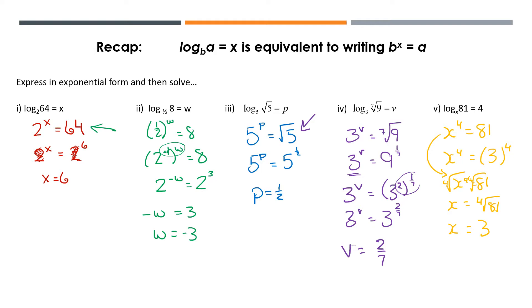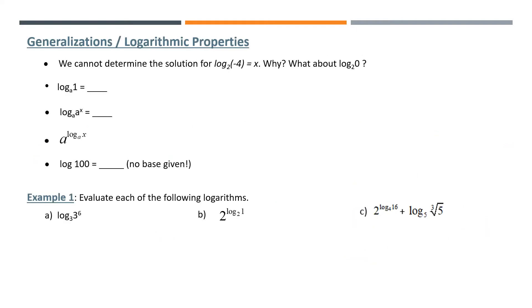That's just a recap of evaluating logs by changing everything to exponential first. Now we've got some generalizations we want to figure out about log properties so that it's easier to calculate some questions without having to always figure everything out individually. For example, we can't get a solution for every log. Why not?